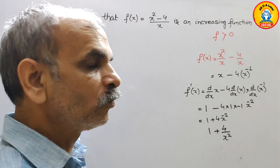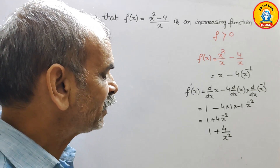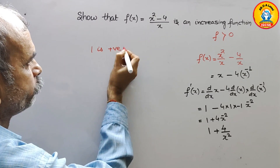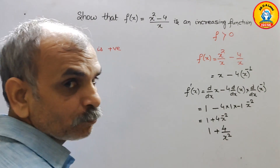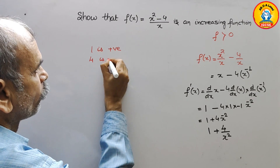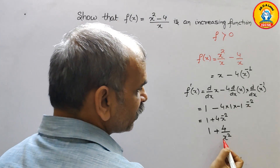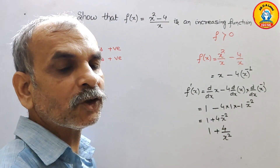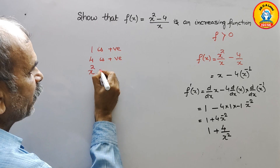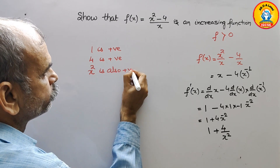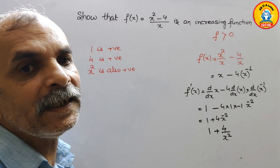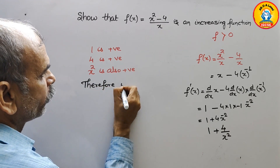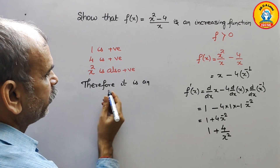Now we check each term: 1 is positive, 4 is positive, and x² is always positive regardless of the value of x. Since all terms are positive, f'(x) = 1 + 4/x² > 0. Therefore, f(x) is an increasing function.